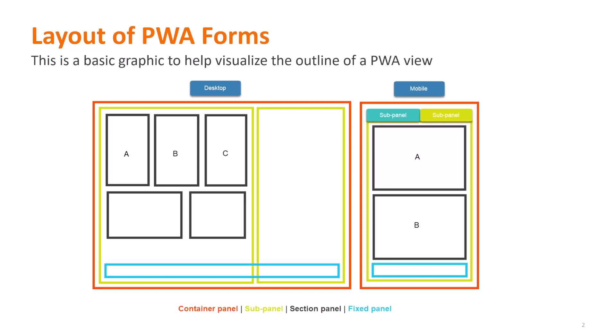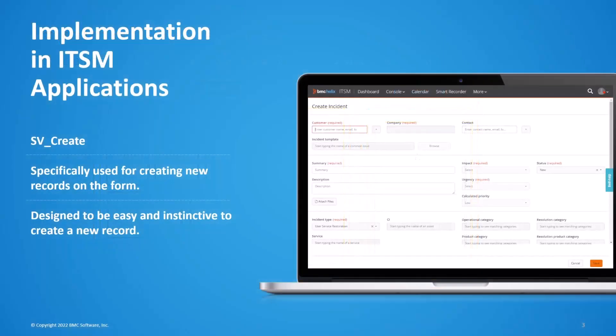The section panel holder is the black outline item. Usually you'll have many of these, and this is going to include your fields, tables, and objects like that. This is where we're going to spend most of our time in PWA development. Every ITSM application has three elements: an SVCreate, which is specifically used for creating records on the form — things like CTM people, AST, change unavailability, change infrastructure, known error, problem investigation, work order. Those kinds of forms have this kind of outline, and you can see the incident option here on screen.